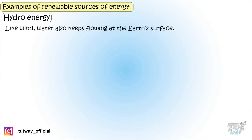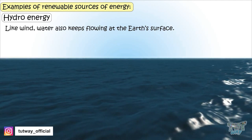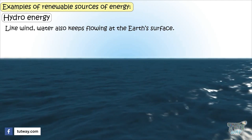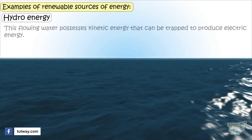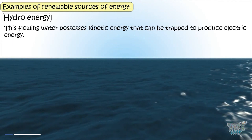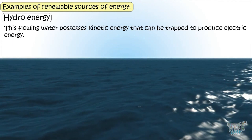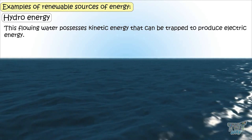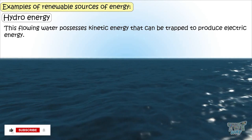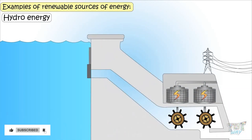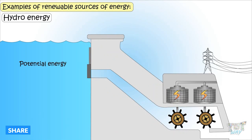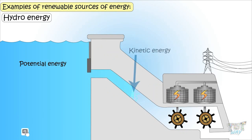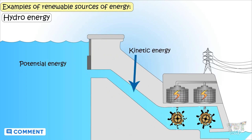Like wind, water is also always flowing on Earth's surface. This flowing water possesses kinetic energy that can be trapped to produce electric energy. Big dams are created to trap the potential energy of water and convert it to kinetic energy, which is then used to produce electricity.